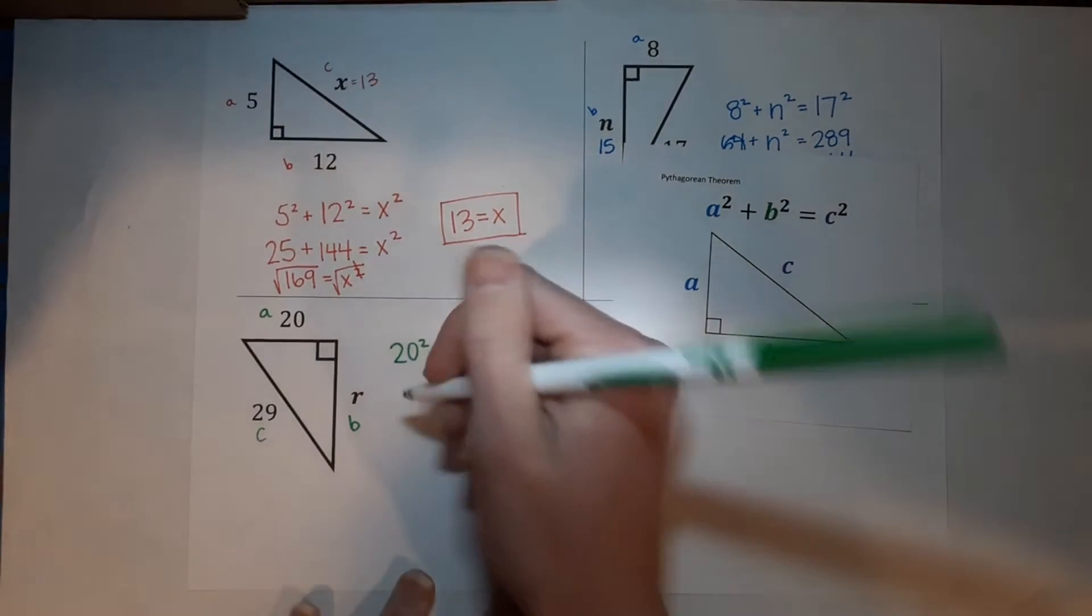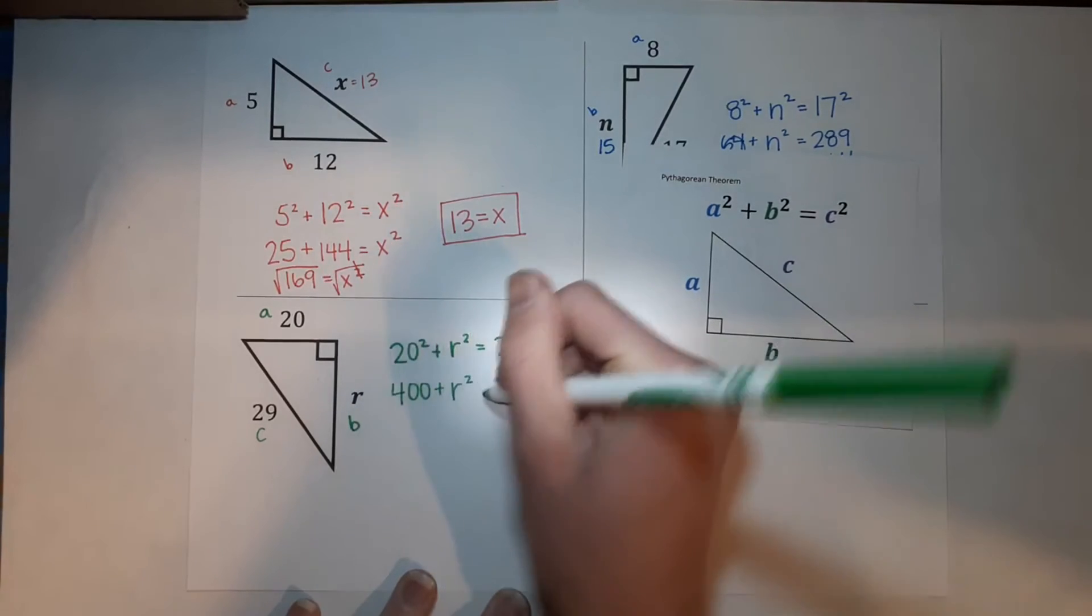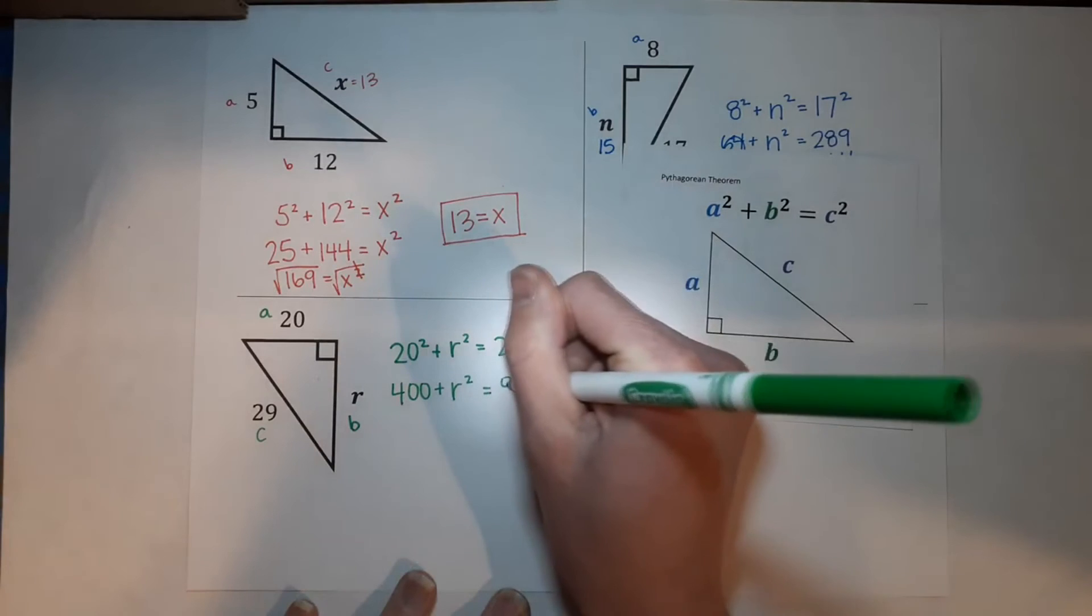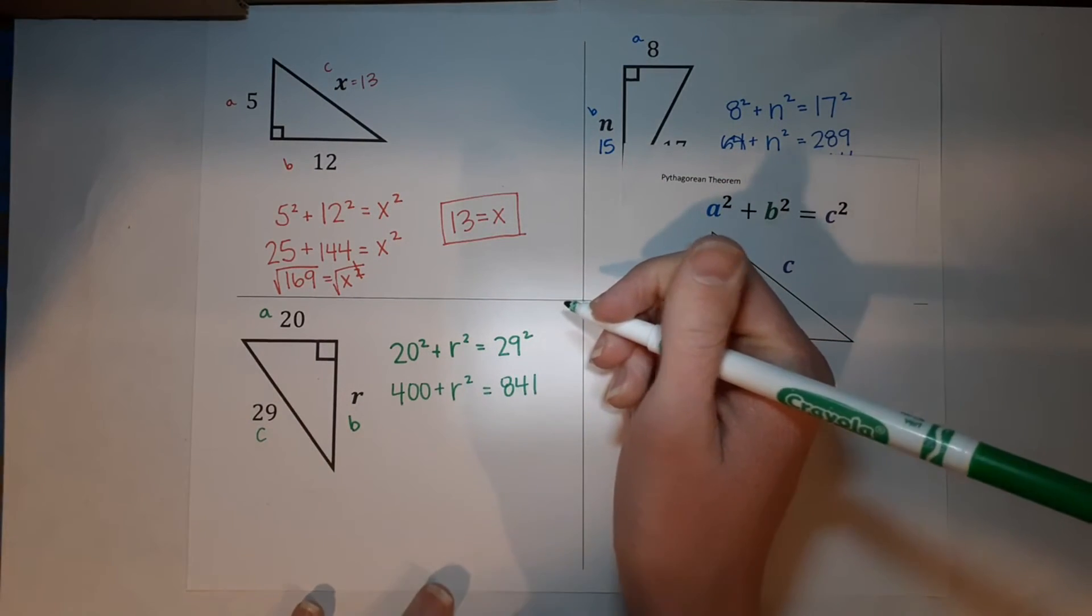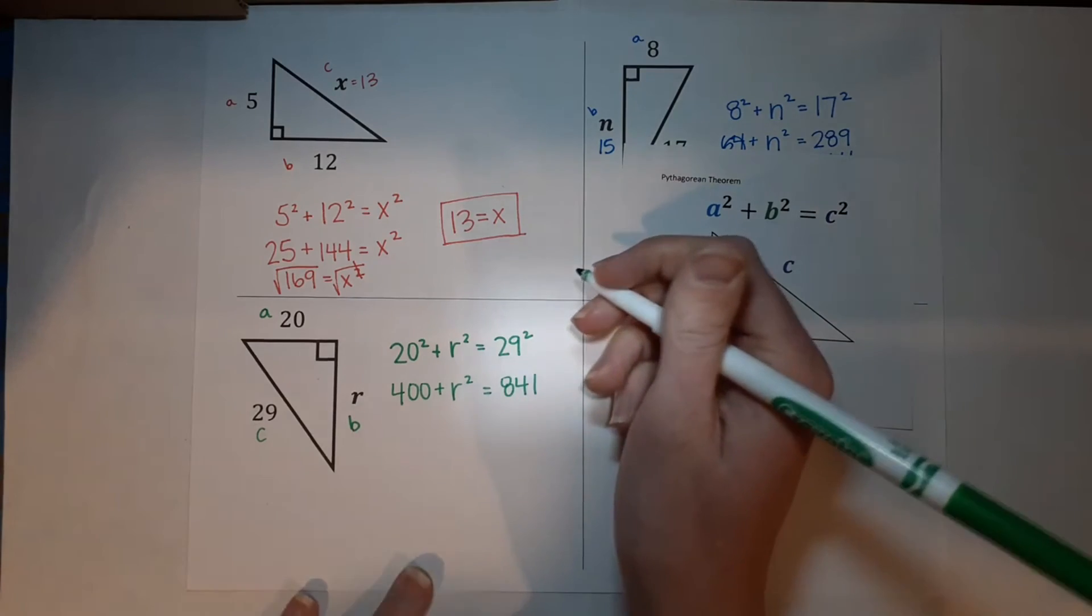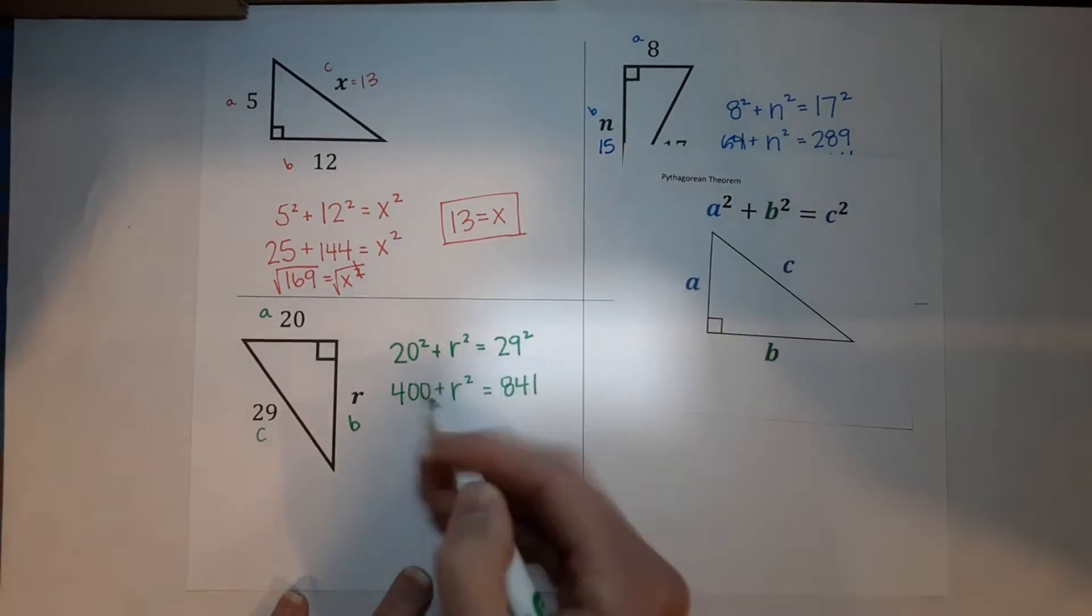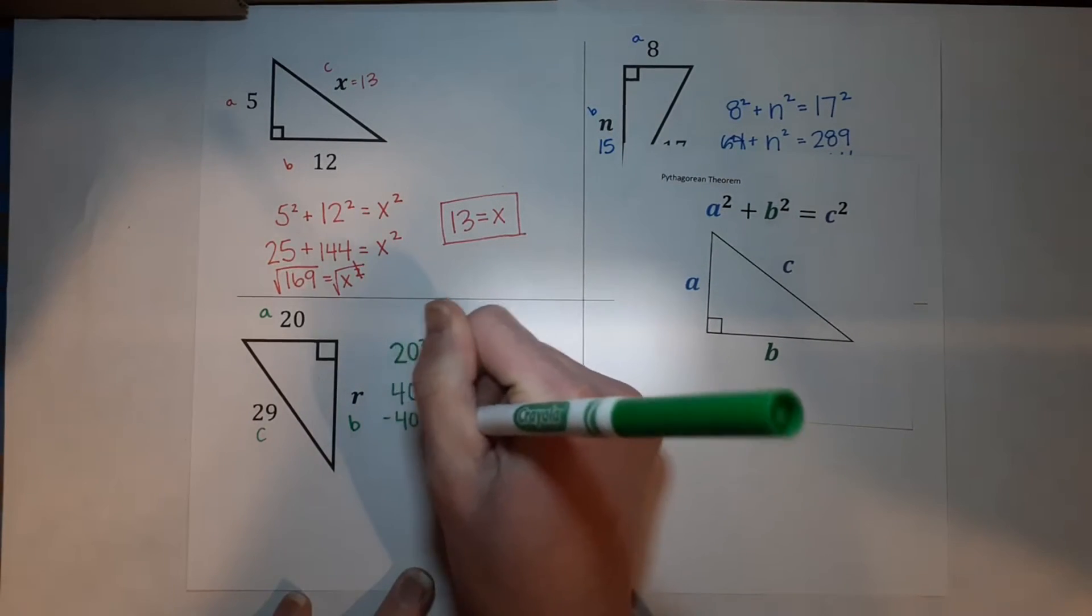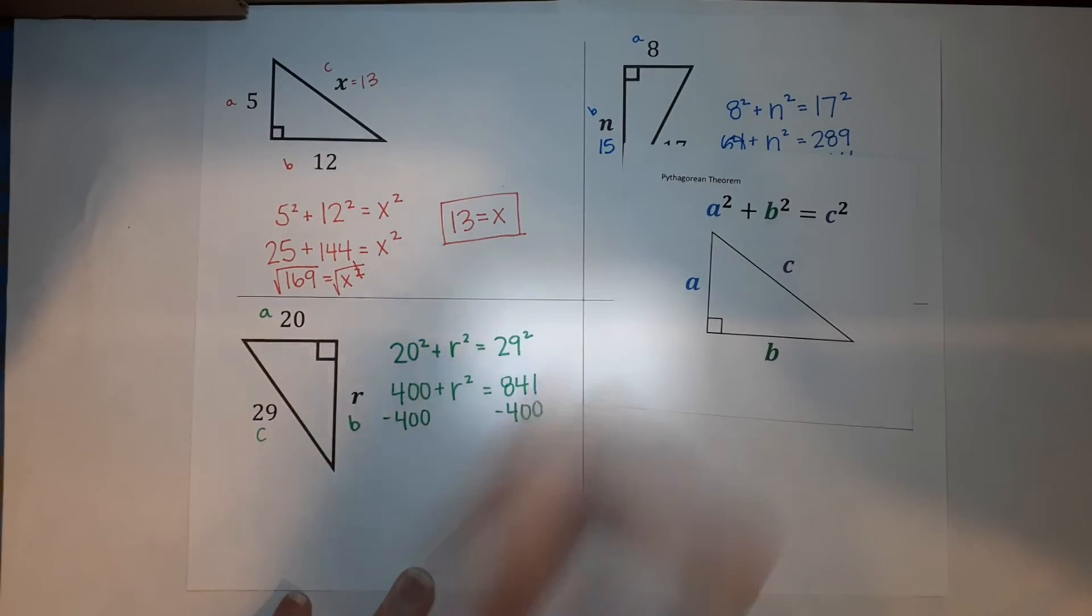Here we go. 20 times 20 is 400 plus, this is the part we don't know yet. R squared. 29 times 29 is 841. Guys, I have this written down. I don't just know that off the top of my head. That'd be cool though. We could pretend. Now I want R all alone. So I need to get rid of this 400. They're being added together. So I'm going to subtract it. If I do it to this side, I got to do it to this side.